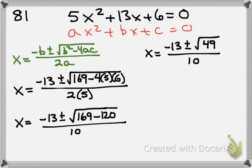So X equals negative 13, plus and minus 7, over 10.